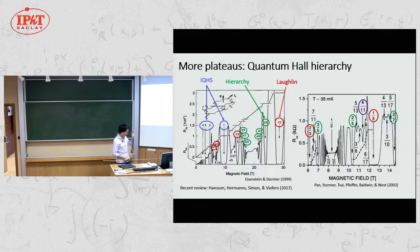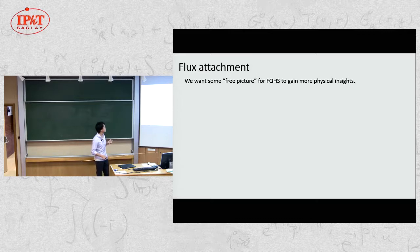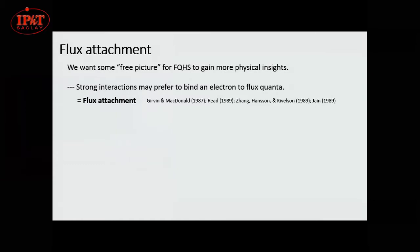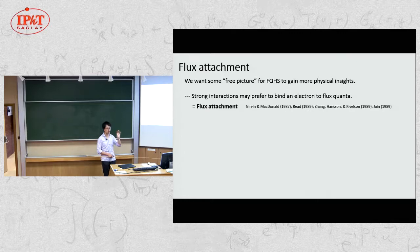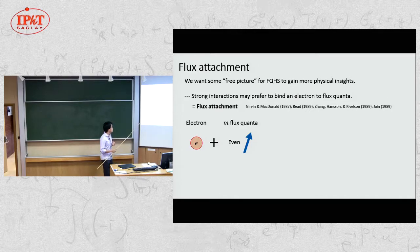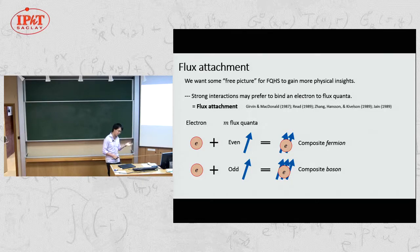To gain more physical insight into the Laughlin state, we introduce the concept of flux attachment. This gives a more nearly free-particle picture of the Laughlin state. You now attach, binding flux quanta to each electron. If you bind an electron to an even number of flux quanta, you get a composite fermion — a fermionic object. If you attach an odd number of flux quanta to electrons, you get a composite boson, changing the statistics from fermion to boson.